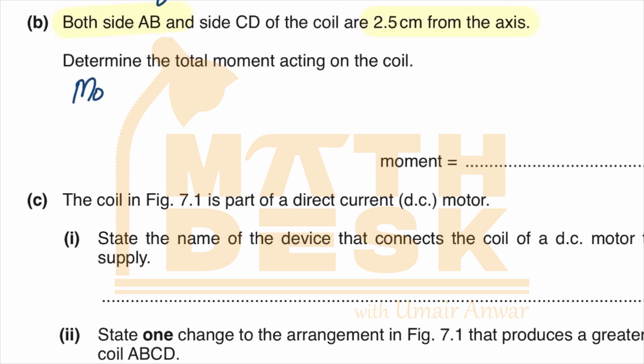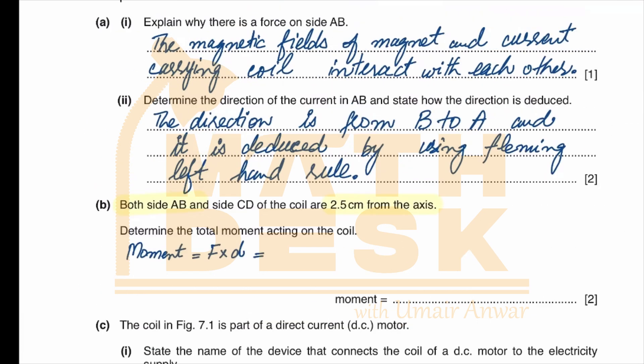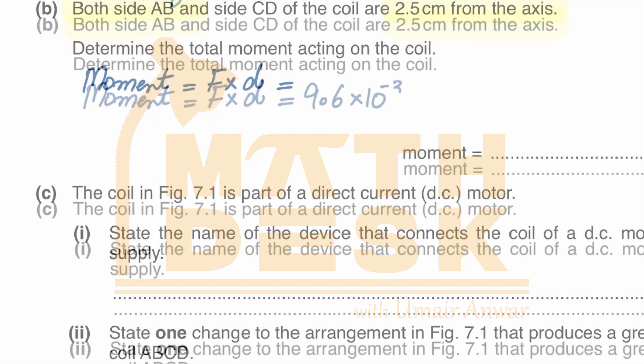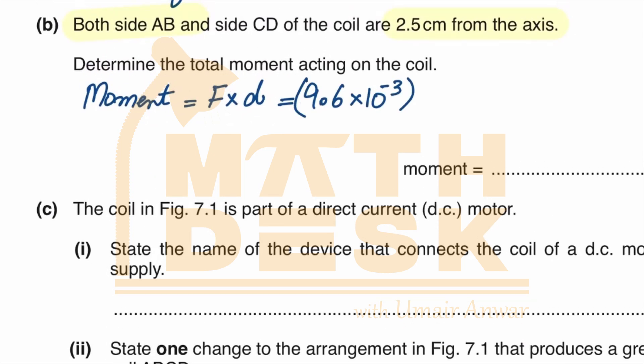Moment is equal to force multiplied by distance. The value of the force is 9.6 × 10⁻³ and the distance for one side is 2.5 centimeters, which converted into meters when we divide by 100 is 2.4 × 10⁻⁴ newton meters.